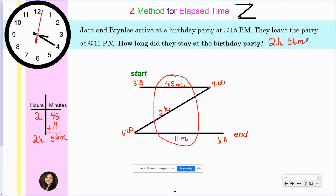This is how you use the Z method for elapsed time. I hope this helped. Thanks.